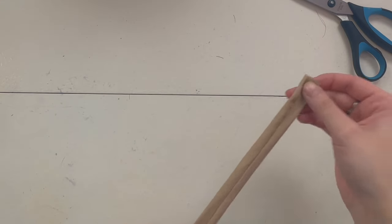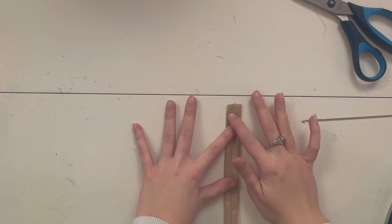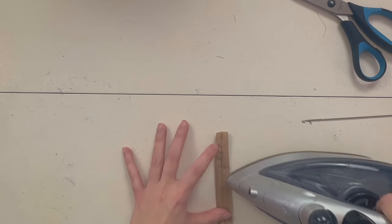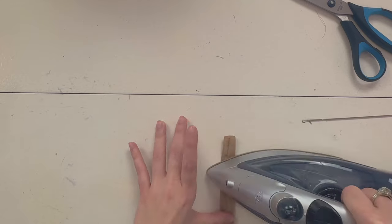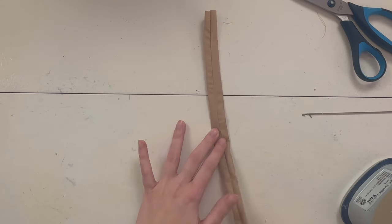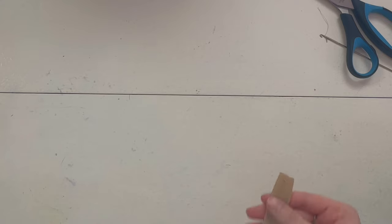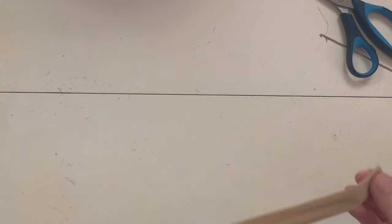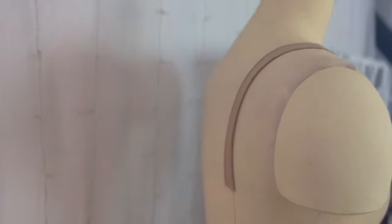Now we're just going to press it flat. I like to put my seam at the bottom, but you can put it to the side if you would like. And that is the first strap done. Let's pin it to the mannequin. And this is what she looks like. Pretty good.